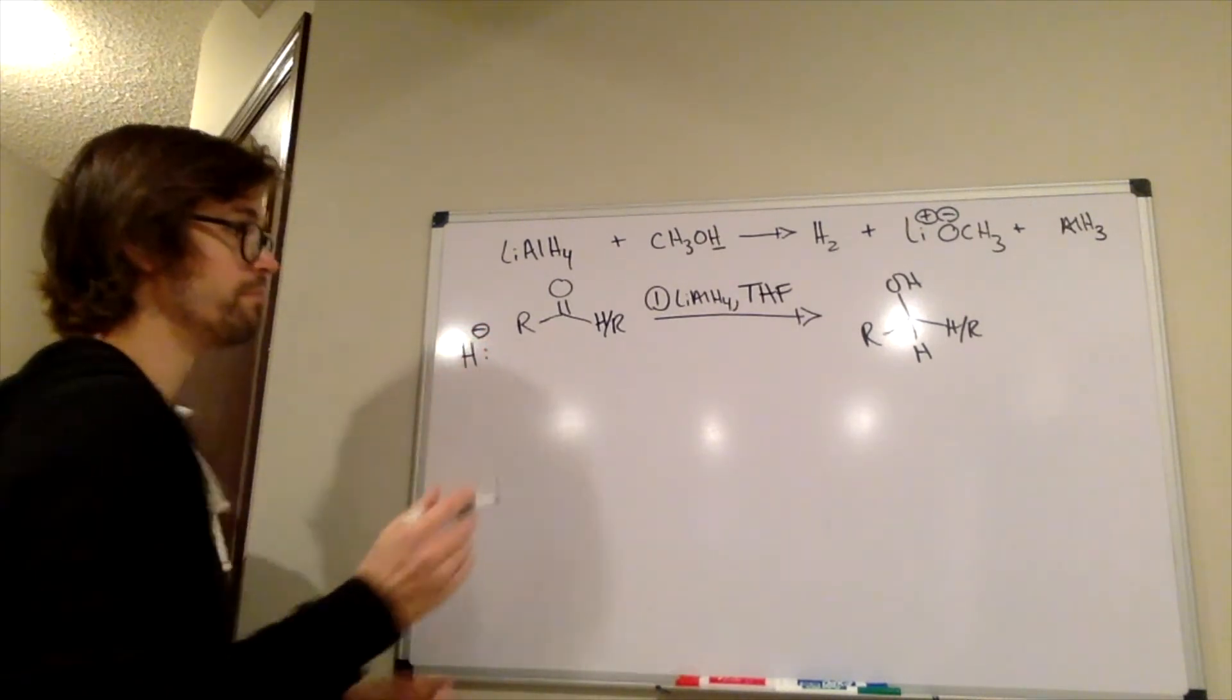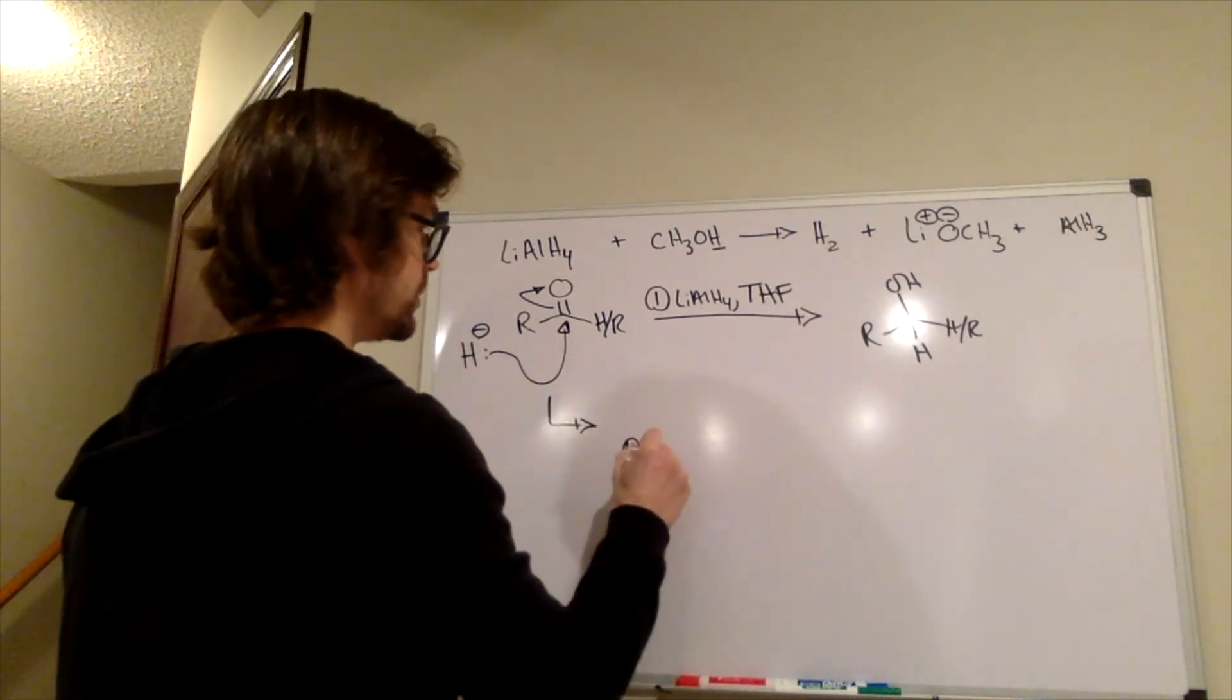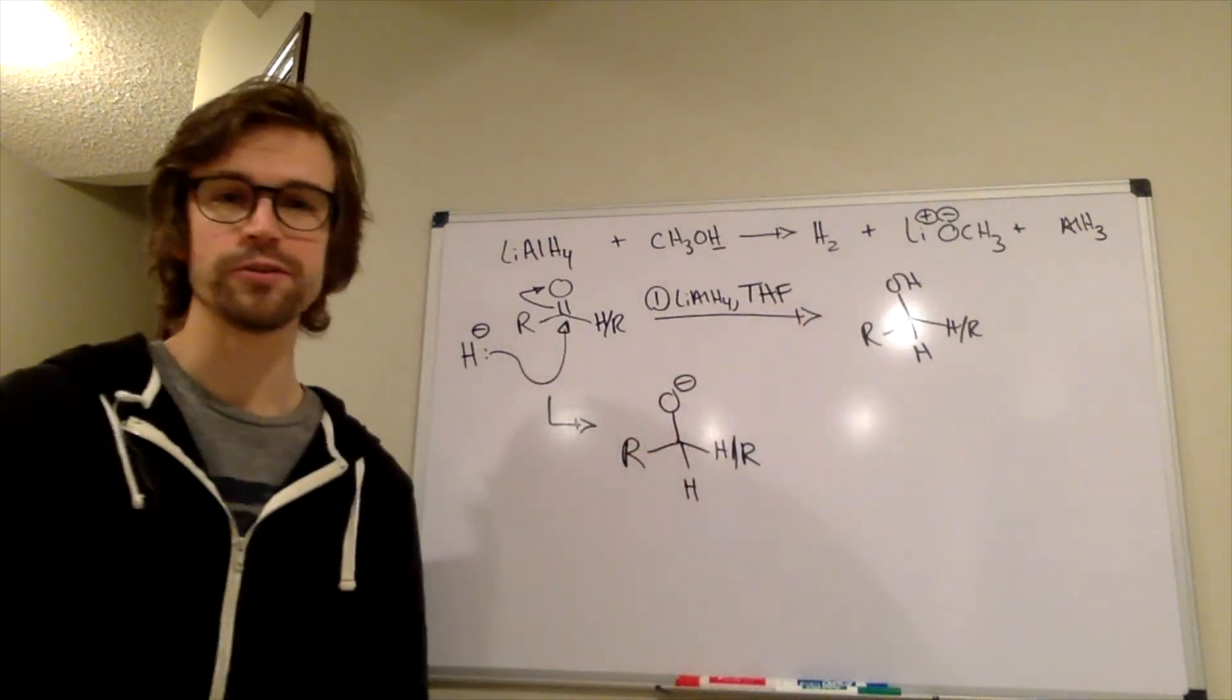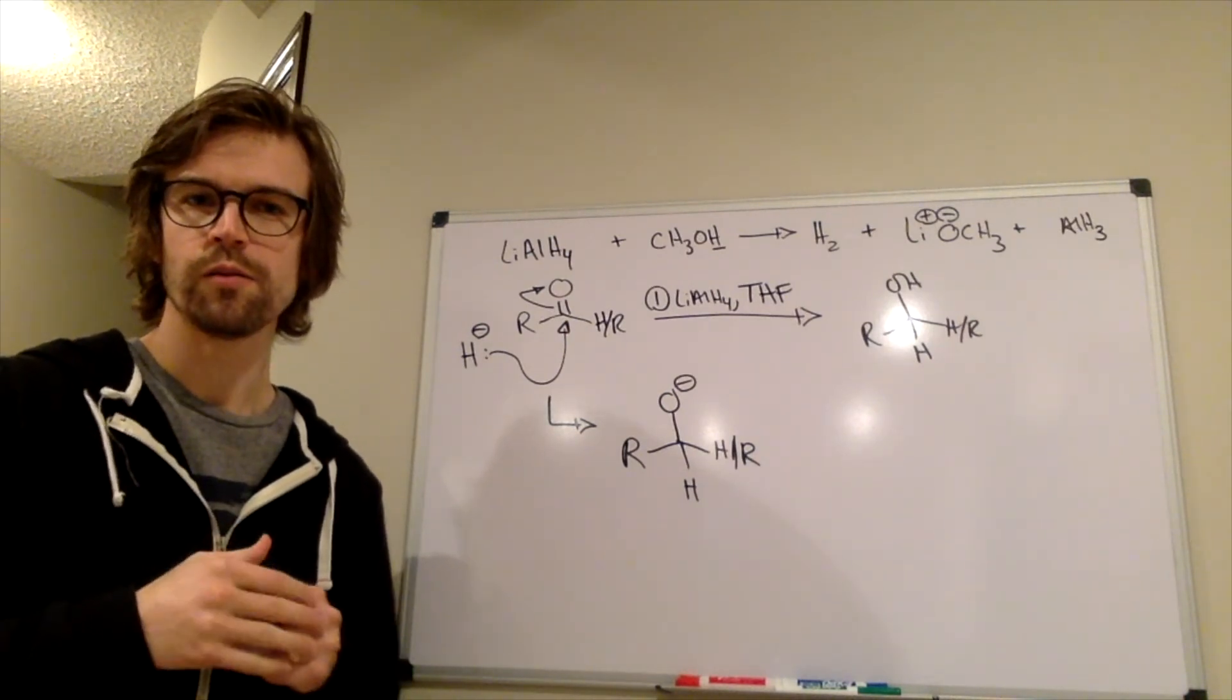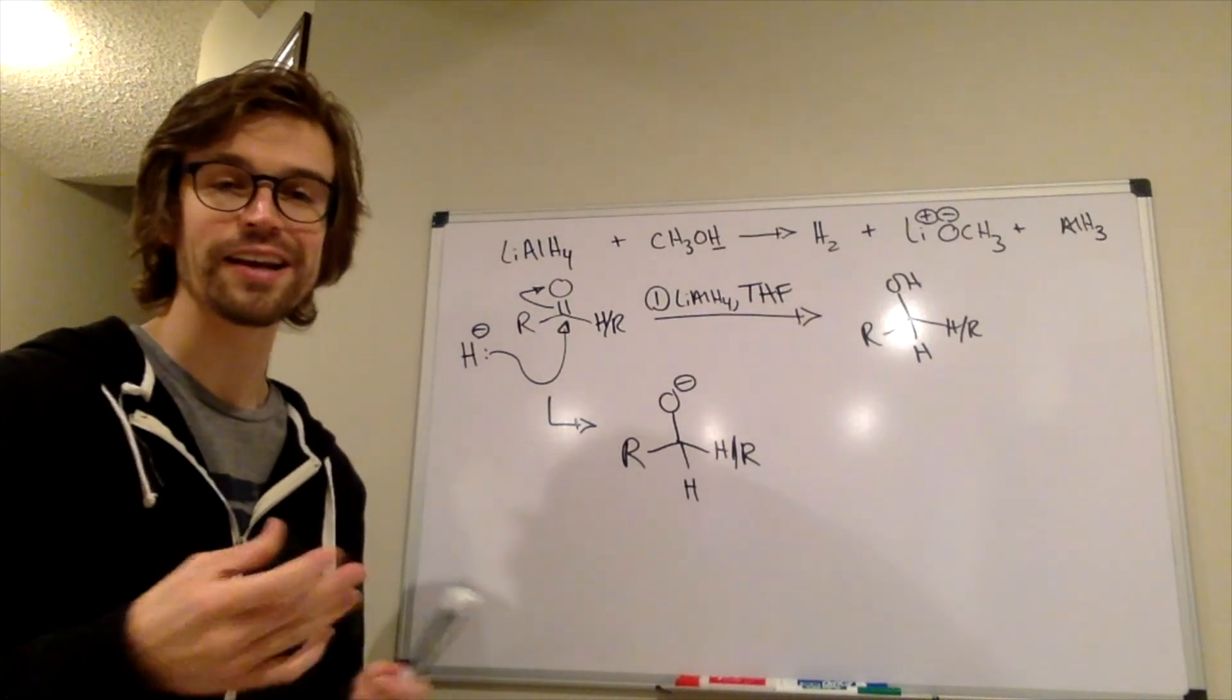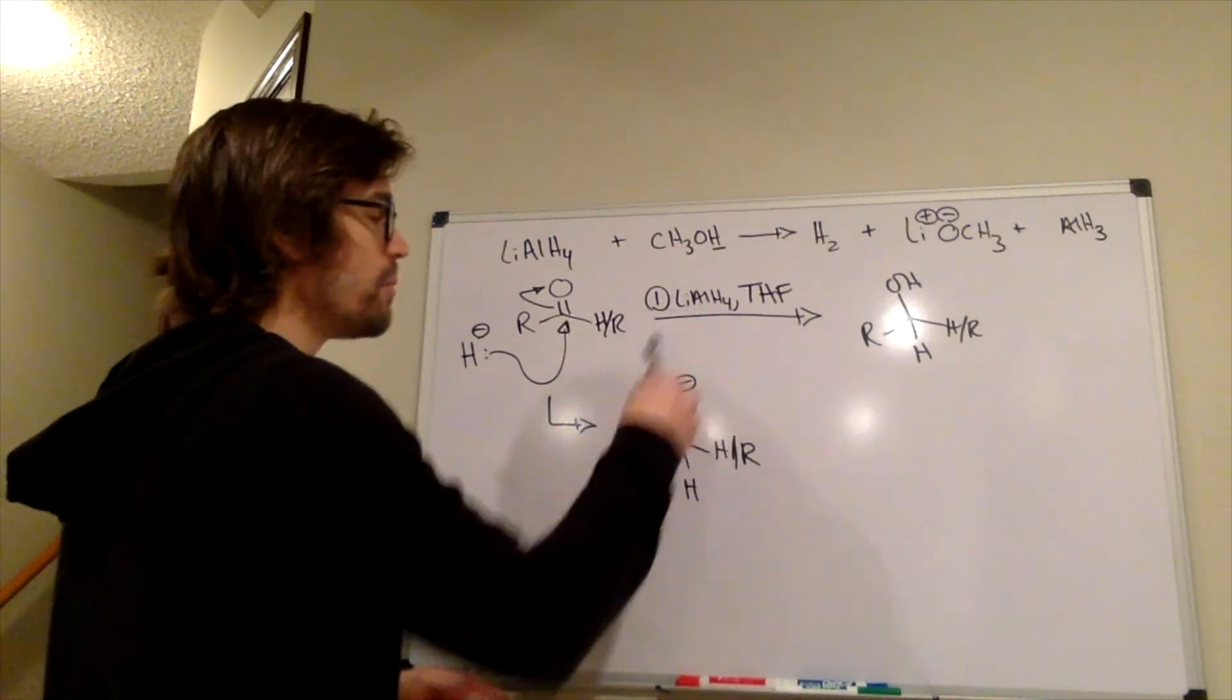Again, even though it's a more reactive reagent, we kind of treat it the same way. It's H minus. So it's going to add to that carbonyl, and that is going to generate this alkoxide intermediate. And at this point, where's this proton going to come from? Do we have any protons around that it could deprotonate? Think about that for a second. Which proton will it be able to grab? Yeah, it actually can't grab any. There are no protons in solution that are acidic enough for this O minus to grab. If there were, lithium aluminum hydride would have reacted with them already. So this has to be kind of a two-step reaction.